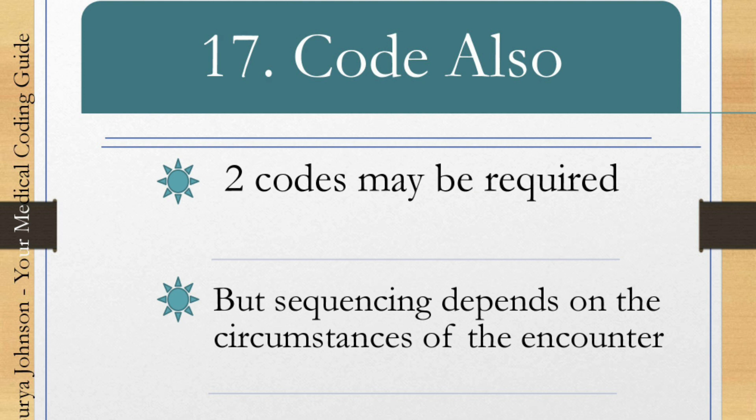Convention 17 is the 'code also' note. If there is a 'code also' instruction, it means two codes may be required to fully describe this condition. The sequencing depends on the circumstances of the encounter. If it is applicable, you can code both codes.